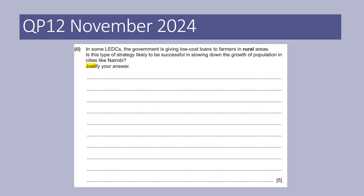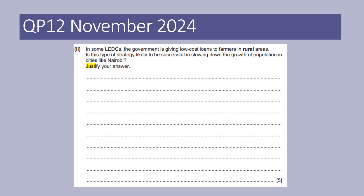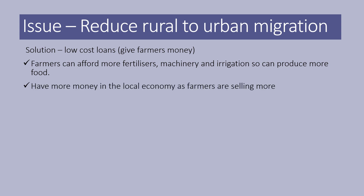Here's another example from question paper 1.2: in some LADCs, the government is giving low-cost loans to farmers in rural areas. Is this type of strategy likely to be successful in slowing down the growth of population in cities like Nairobi? You need to think in terms of stereotypes about the types of environments people live in. Farmers probably aren't making a lot of money and are living in poor, not very well provided-for rural areas. The issue is to reduce rural-to-urban migration, and the solution is providing low-cost loans — another way to give farmers money. If you give farmers money, potentially they can afford more fertilizers, machinery, and irrigation strategies so they can produce more food. That means farmers have more money, boosting the local economy and making working in rural areas more appealing, so people are less likely to move to urban areas.